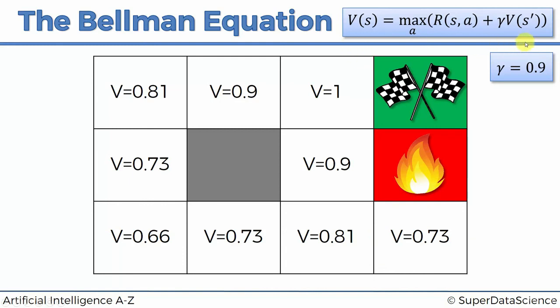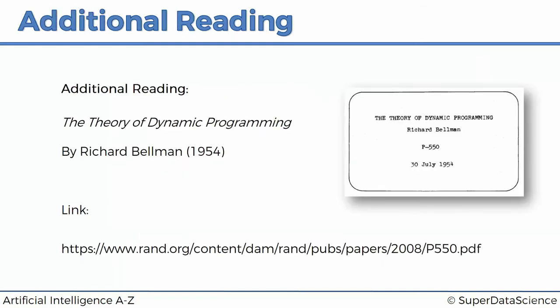Now you can see that because we've created this equation and synthetically created this whole concept — the closer you are to the finish line, the more valuable that state is — it's now pretty obvious for the agent which way it should go. We'll talk more about that in the coming tutorials. I hope you enjoyed today's session. It might sound a bit basic at this stage, but as we go through this section we will add more complexity to it. If you can't wait, there's a paper you can look at — the original paper by Richard Bellman called 'The Theory of Dynamic Programming' from 1954, available at the link shown. You can jump straight into it and read from the author of the Bellman equation, though bear in mind it is quite a mathematically heavy paper. I look forward to seeing you next time. Enjoy AI. Bye.